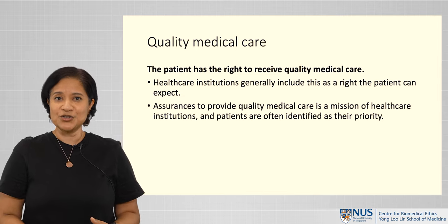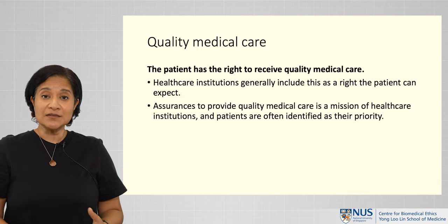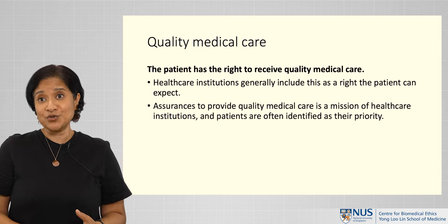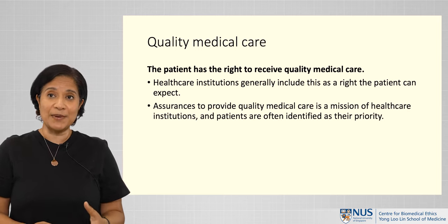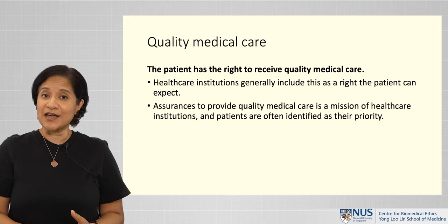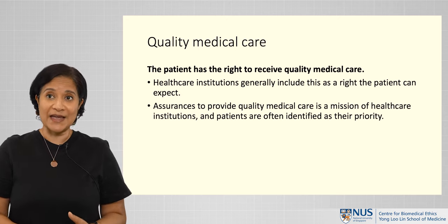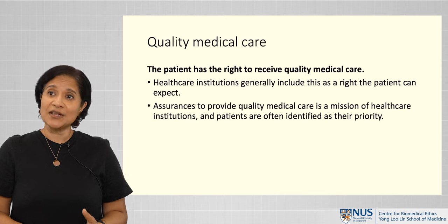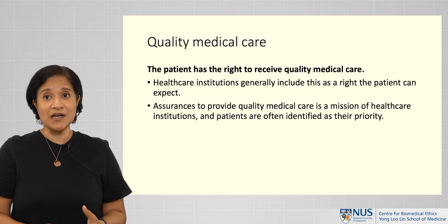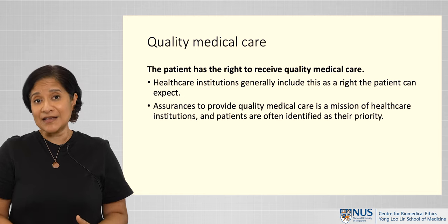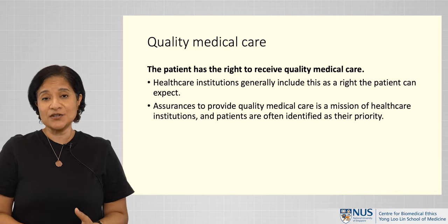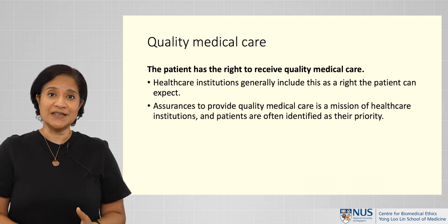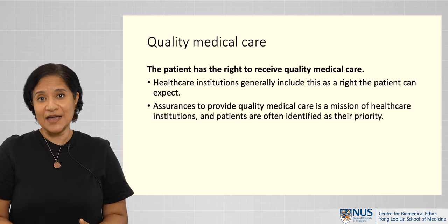First, in relation to patient's rights, the patient has a right to receive quality medical care. Health care institutions generally include this as a right that a patient can expect when they come to the health care institution for medical treatment or care. Such assurances to provide quality medical care is usually a mission of health care institutions, and patients are identified very often as their priority. Health care professionals and other professionals make up the health care team that are involved in delivering that care to the patient.